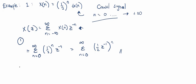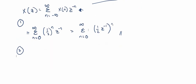Now we're going to evaluate this expression. When n equals zero, we get one. The next term is (1/2)z raised to negative one, then (1/2)z raised to negative one squared, and so on.